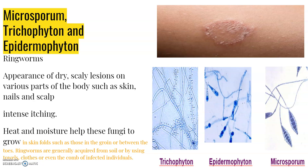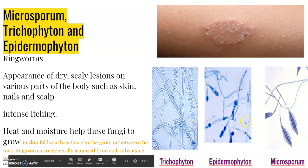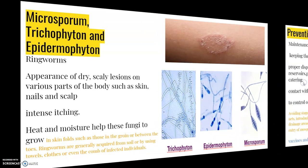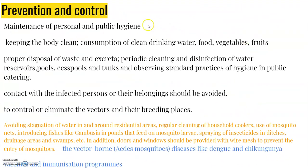Maintenance of personal and public hygiene is very important for prevention and control of infectious diseases. Personal hygiene measures include keeping the body clean and consuming clean drinking water, food, vegetables, and fruits. Public hygiene measures include proper disposal of waste and excreta, periodic cleaning and disinfection of water reservoirs, and standardized practices of hygiene in public catering. Infected persons should be avoided.